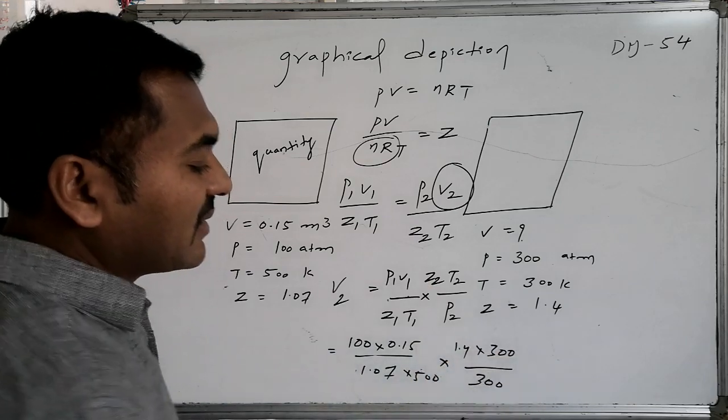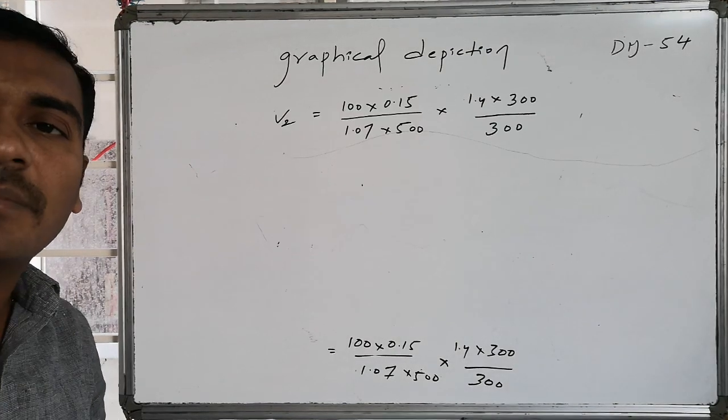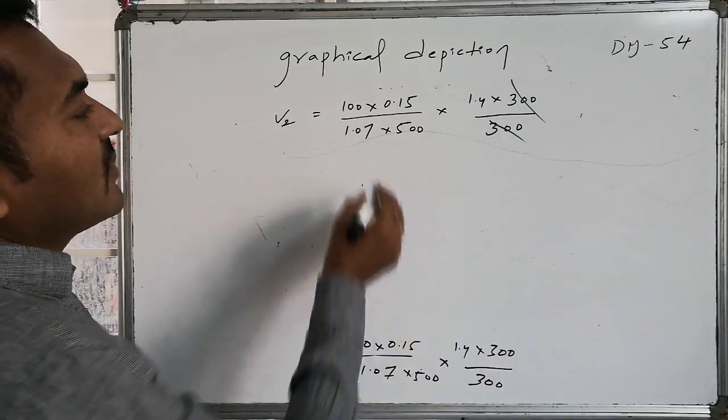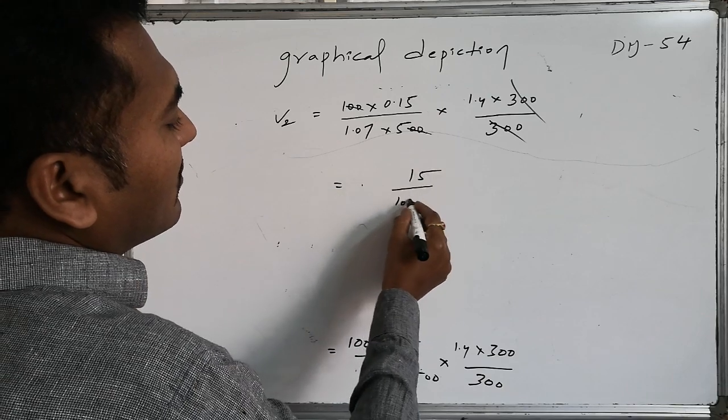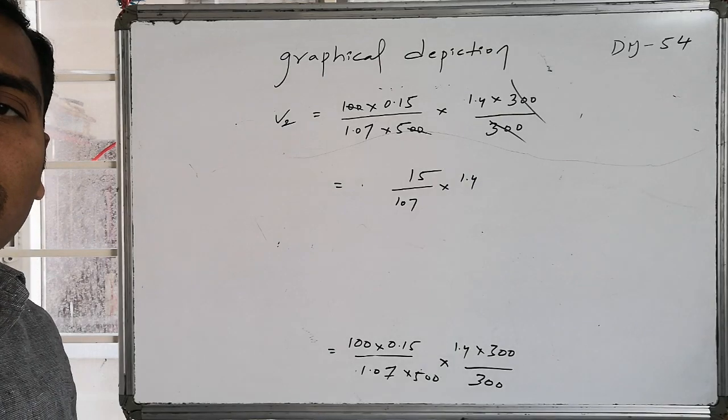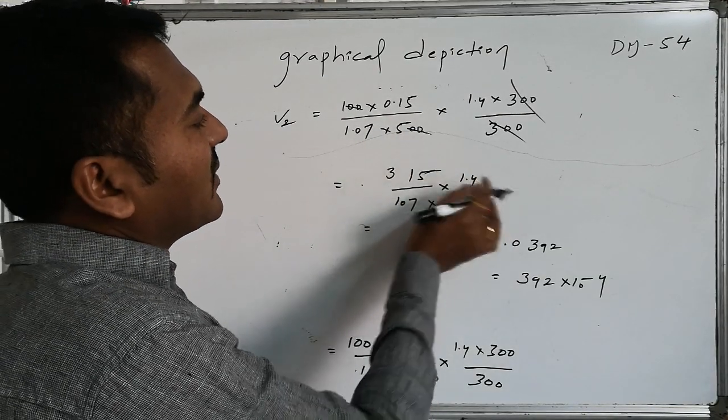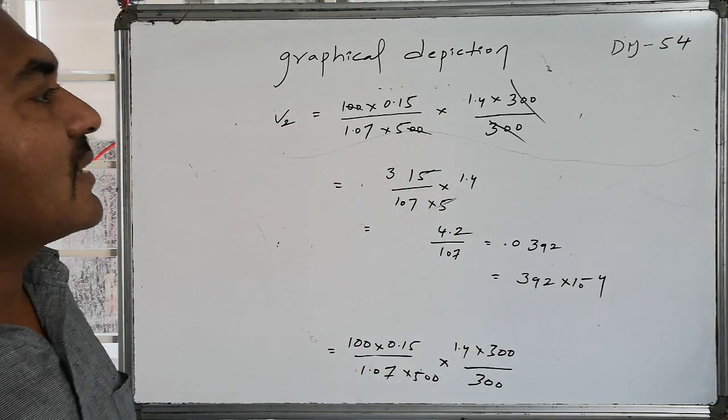Writing in a proper version, so this will become equal to, these two getting cancelled, whereas these two also getting cancelled. That reaches as 15 by 107 into 1.4. This value becomes equal to 15 into 1.4 by 107 into 5.